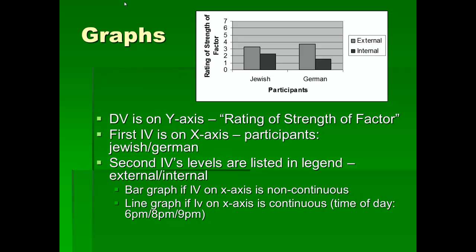A bar graph is used if the IV on the x-axis is non-continuous — that is, if it consists of different categories of things, like Jewish versus German. A line graph would be used if the IV on the x-axis is continuous — meaning there's no break between the different levels. For example, if one level is 6 p.m., another is 8 p.m., another is 9 p.m., there is such a thing as 8:30 between them, so that means it's continuous.